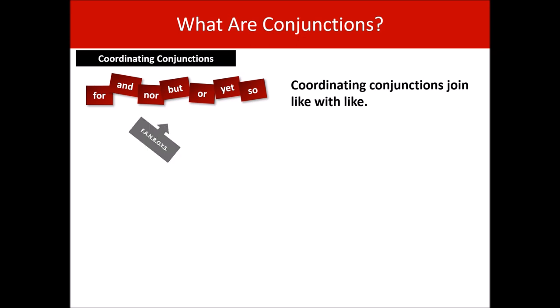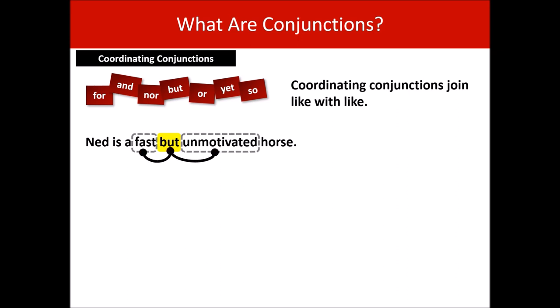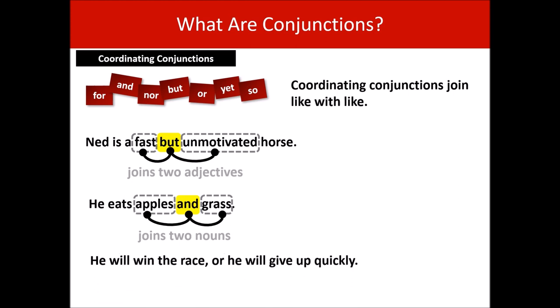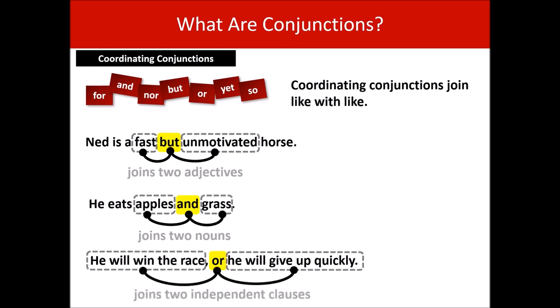What do we mean by 'like with like'? Ned is a fast but unmotivated horse — 'but' has joined two adjectives. He eats apples and grass — 'and' is the coordinating conjunction, and this time it's joined two nouns. He will win the race or he will give up quickly — 'or' is our coordinating conjunction, and this time it's joined two independent clauses. Notice there is a comma before the 'or,' because that's what you do when a coordinating conjunction joins two independent clauses. The key point is that it's like with like.